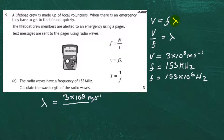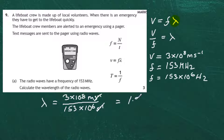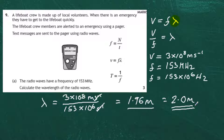Dividing 3 × 10⁸ by 153 × 10⁶, we note that the units of seconds⁻¹ cancel, leaving metres as the unit for wavelength. Doing that in a calculator gives 1.96 metres, which rounded to two significant figures is 2.0 metres. So the wavelength of the radio waves reaching the pager is 2.0 metres.